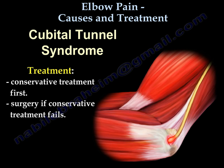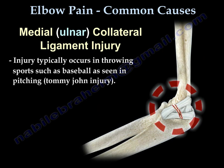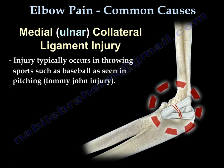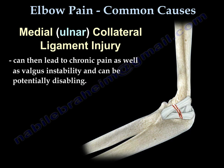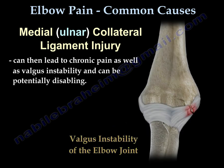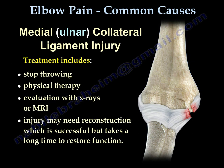Ulnar collateral ligament injury occurs in throwing sports such as baseball pitching. It can lead to chronic pain and valgus instability, which can be very disabling. Treatment includes stopping throwing and physiotherapy, with evaluation by X-ray or MRI. The injury may need reconstruction, which is usually successful but takes a long time to restore elbow function.